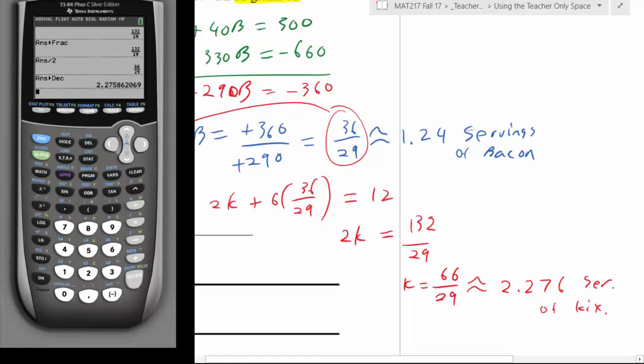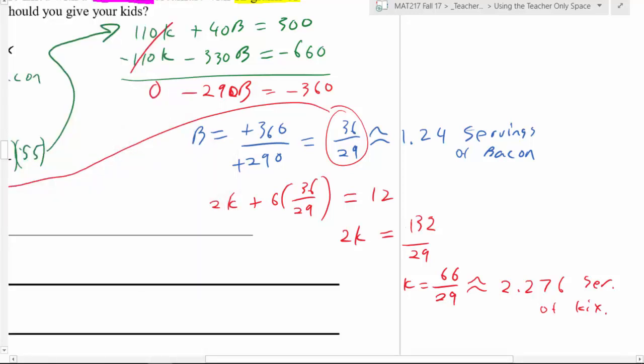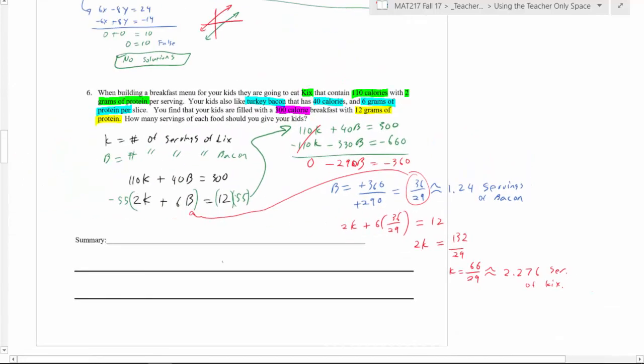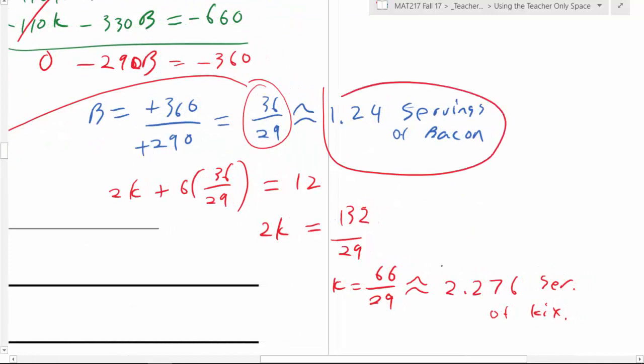So to achieve our caloric and protein goal, you need to eat one and a quarter strips of bacon and two and a quarter-ish servings of Kix. And you will hit 300 calories with 12 grams of protein. So big idea, big idea, word problems. Start by defining your variables, and don't get confused at what the problem's asking for. That's how you find your variables most of the time. Then build your equations, then solve the problem like normal, right? And then at the end, don't forget your units. You have to tell me what it means. Writing 1.24 and 2.276 on the page doesn't make sense. Writing it as an ordered pair doesn't make sense. I am no longer asking you to find an intersection of a line, right? I'm asking you to tell me how much to eat. So make sure you answer the question in a way that makes sense.